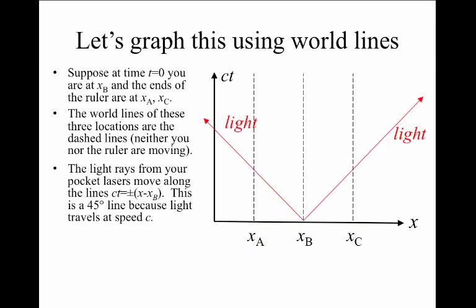Now, I shine the pocket lasers, one off to the left and one off to the right. Those two light rays, at least as represented as world lines, are going to move at 45 degrees. They would be the graph CT is equal to plus or minus x minus xB. And that's because the speed of light is C and is the same for both rays of light.